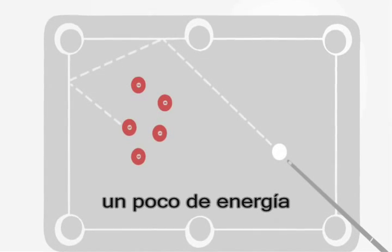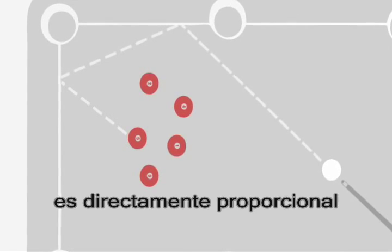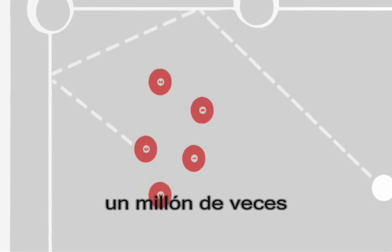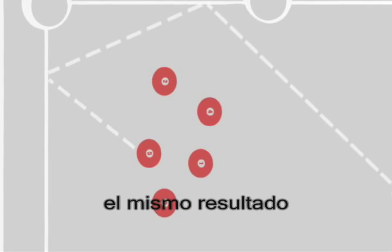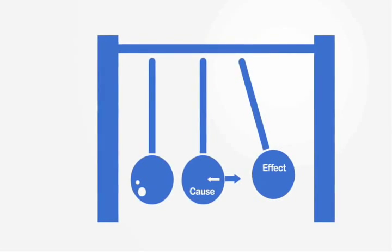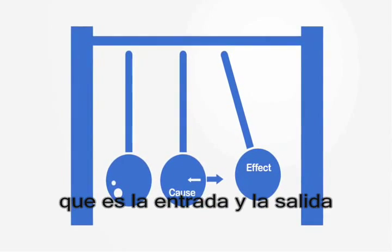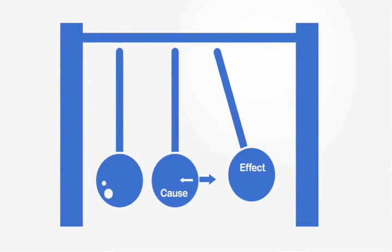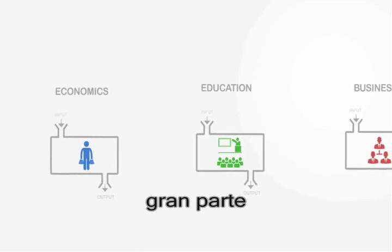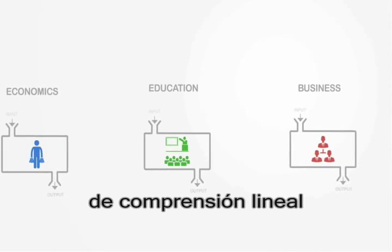If we input some energy into this system by, say, pushing one of the balls, the outcome to this event is directly proportional to the input and is predetermined by it. We can repeat the same action a million times and we will get the exact same results. We call this type of system a deterministic or linear system, because we can draw a direct line between the cause and effect — that is, the input and output to the system.